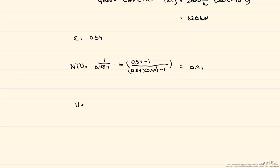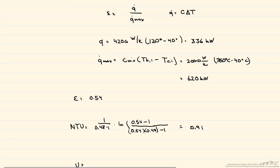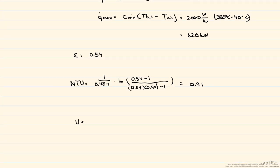And from that, we can calculate the U using the equation from here. Our U is going to be equal to this NTU, 0.91, times our C_min, 2,000 watts per K, divided by our heat transfer area, 20 meters squared. And our U, or overall heat transfer coefficient, equals 92 watts per meter squared Kelvin.